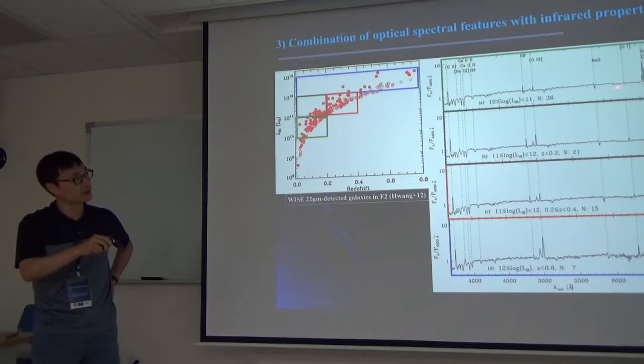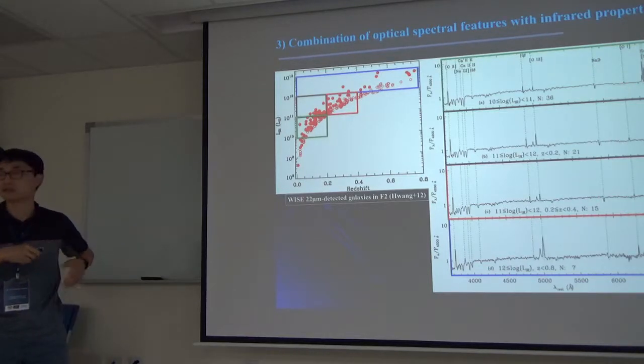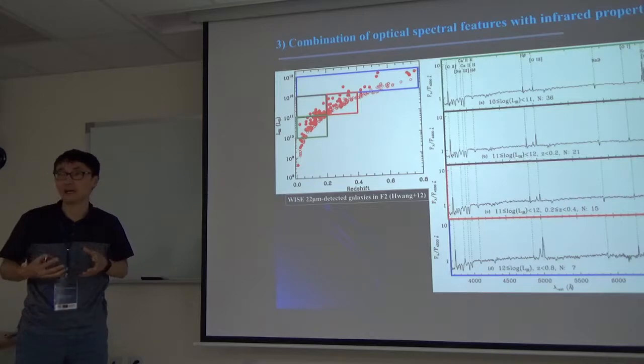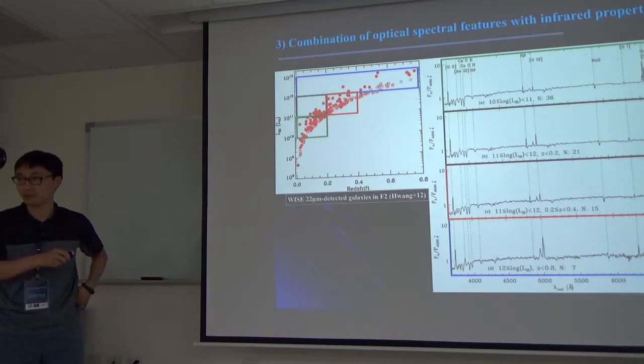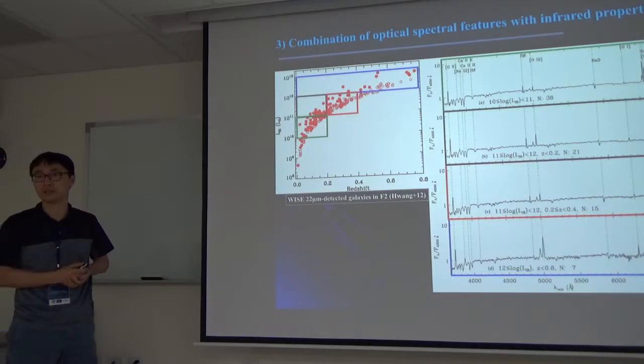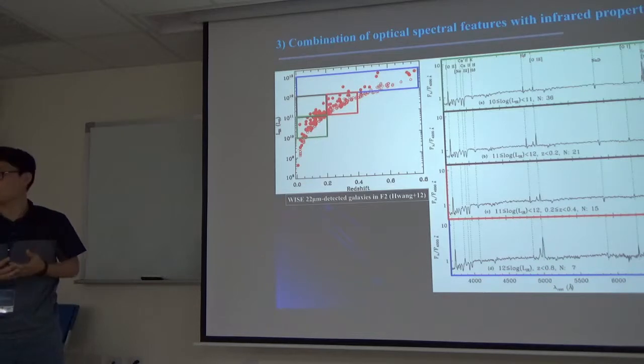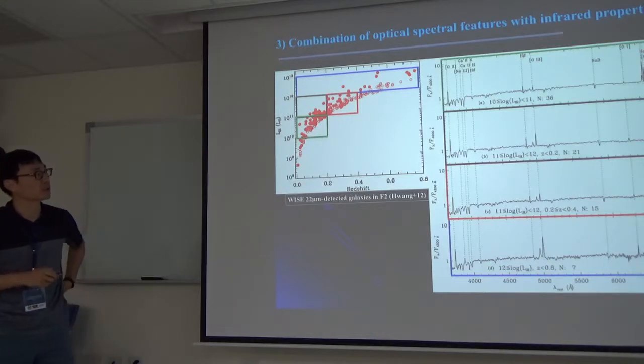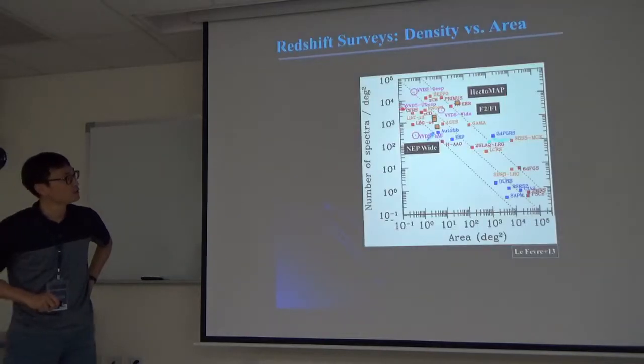The third one could be you can combine optical spectral features with infrared properties. For example, here the y-axis is infrared luminosity as a function of redshift. This is for WISE 20 micron detected galaxies in one of the fields, FAST FAIR2. If you just select galaxies in this way, you can make many boxes and stack optical spectra in each box. These are stacked spectra for each box. You can clearly see the difference.